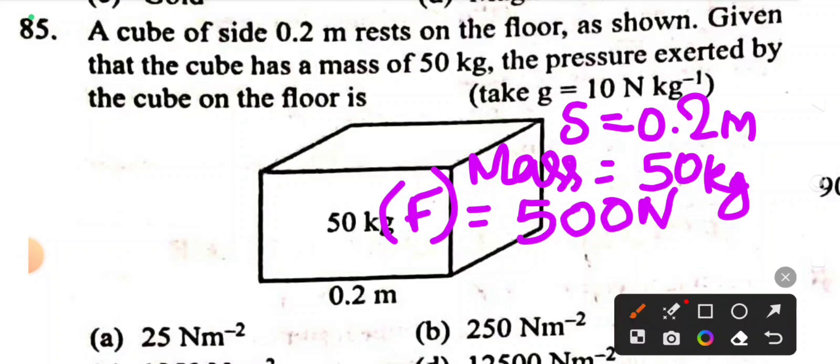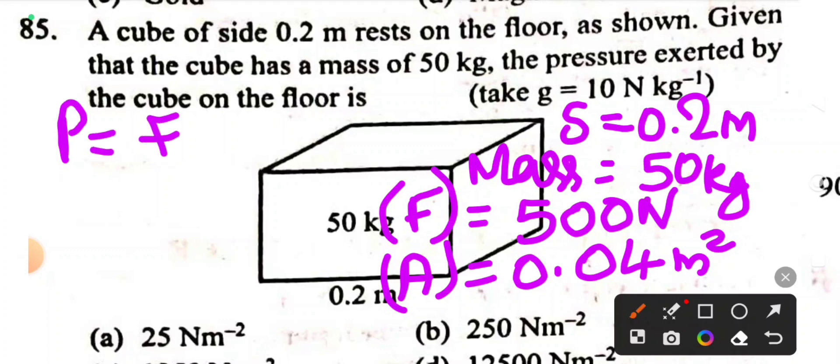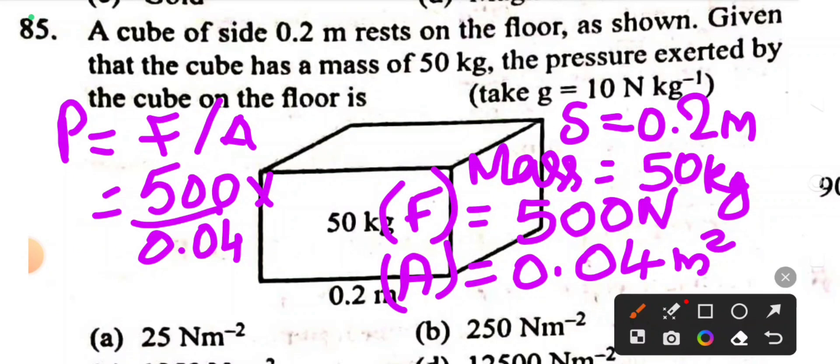Area of the cube is 0.2 into 0.2, which is 0.04 meter square. The pressure equals force divided by area, which is 500 newton divided by 0.04. Multiply by 100 to remove the decimal, so we get 50,000 by 4.